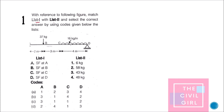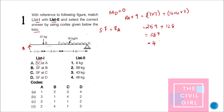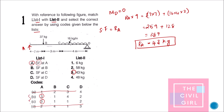The first question: with reference to list one, match list two and select the correct answer using codes given below. This is a simply supported beam with shear force at A, B, C, and D. Shear force at A will be equal to the reaction at A. To find reaction at A, equate moment at D equal to zero. RA comes out to be 43 kg, so A matches with 3. We can eliminate options A and D.